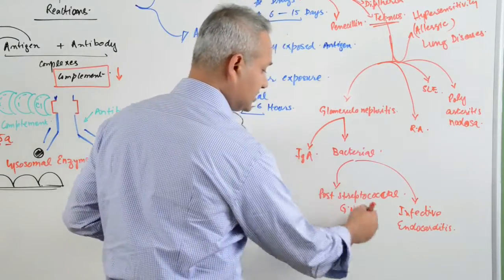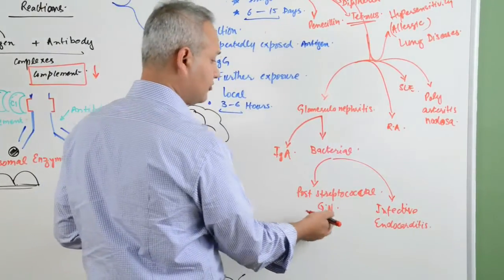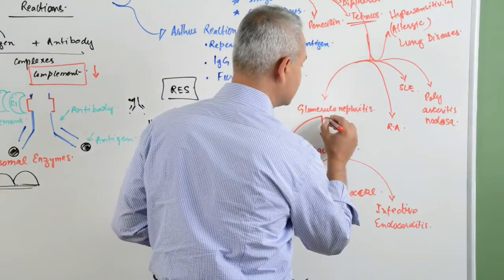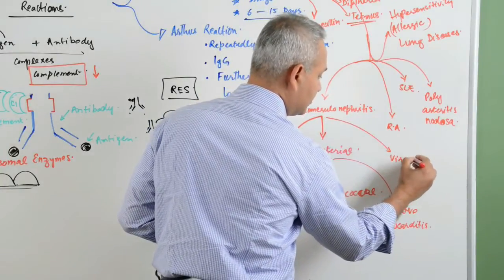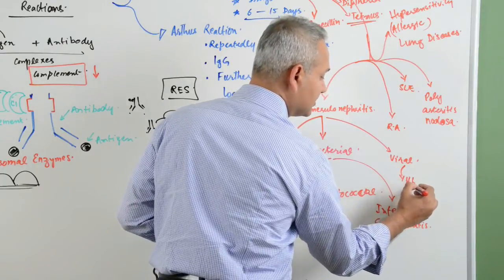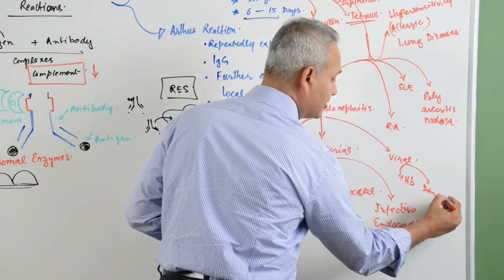So bacterial infective endocarditis, post-streptococcal glomerulonephritis due to streptococcus, then viral reasons including hepatitis B virus, dengue fever, and hemorrhagic fever virus.